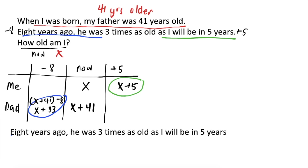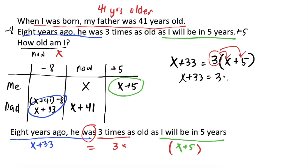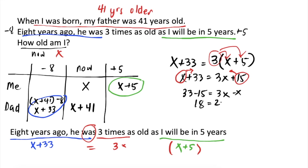So, para ma-solve ang x, i-translate natin ito into equation form. 8 years ago, his age was x plus 33. I will be in 5 years — that would be x plus 5. So, 8 years ago, ang age niya was equal to 3 times, meaning, i-multiply natin ang x plus 5 by 3. So, ang equation natin is x plus 33 is equal to 3 times x plus 5. I-distribute natin ang 3, we will get x plus 33 is equal to 3x plus 15. I-dipot natin ang x sa other side, at ang 15 sa other side — we will get 33 minus 15 is equal to 3x minus x. Simplify natin, 18 is equal to 2x. Divide both sides by 2, we will get 9 is equal to x. So, our final answer is I am 9 years old.